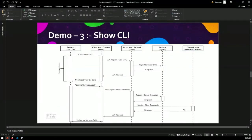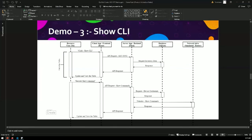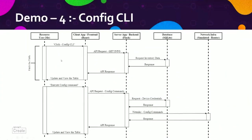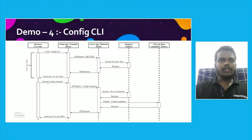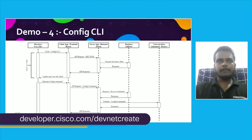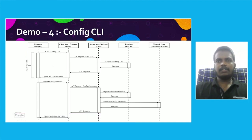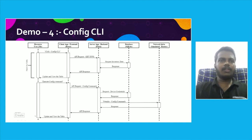For the API flow of the config CLI, it works similarly. Clicking WebCLI collects the device information, then the config commands are sent. React sends the commands and device name to Flask. Flask requests the credentials for that device, gets the response, and then uses Netmiko to push the configuration to the device and retrieve the response. Flask passes the result to the front-end, which displays it to the user.